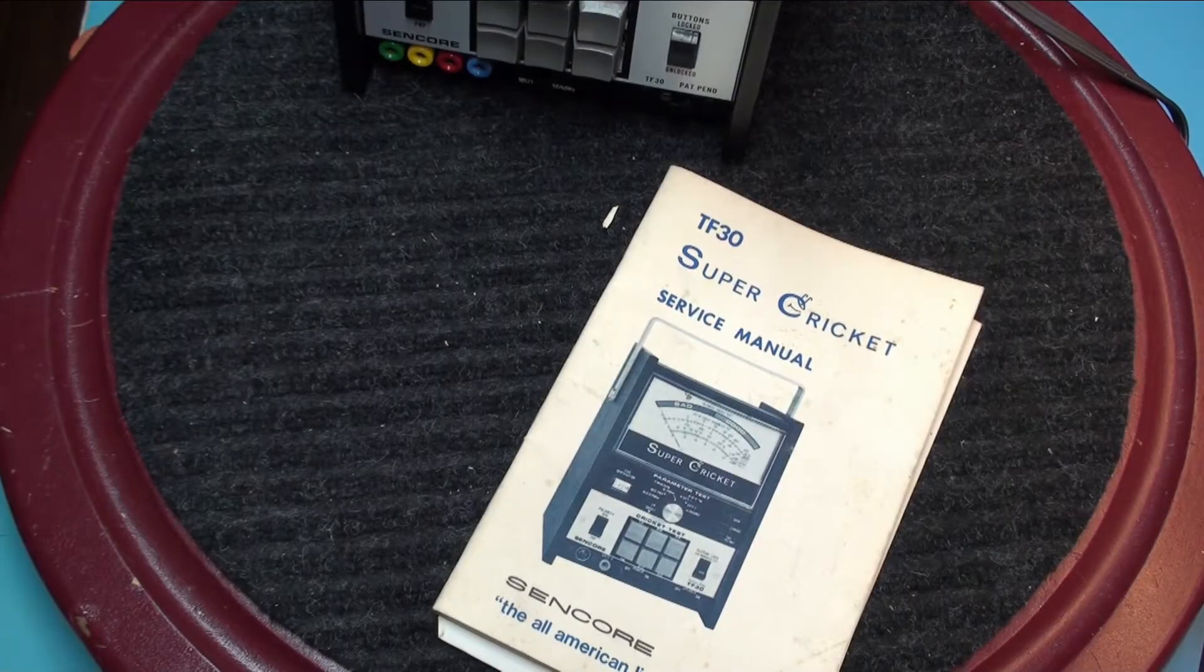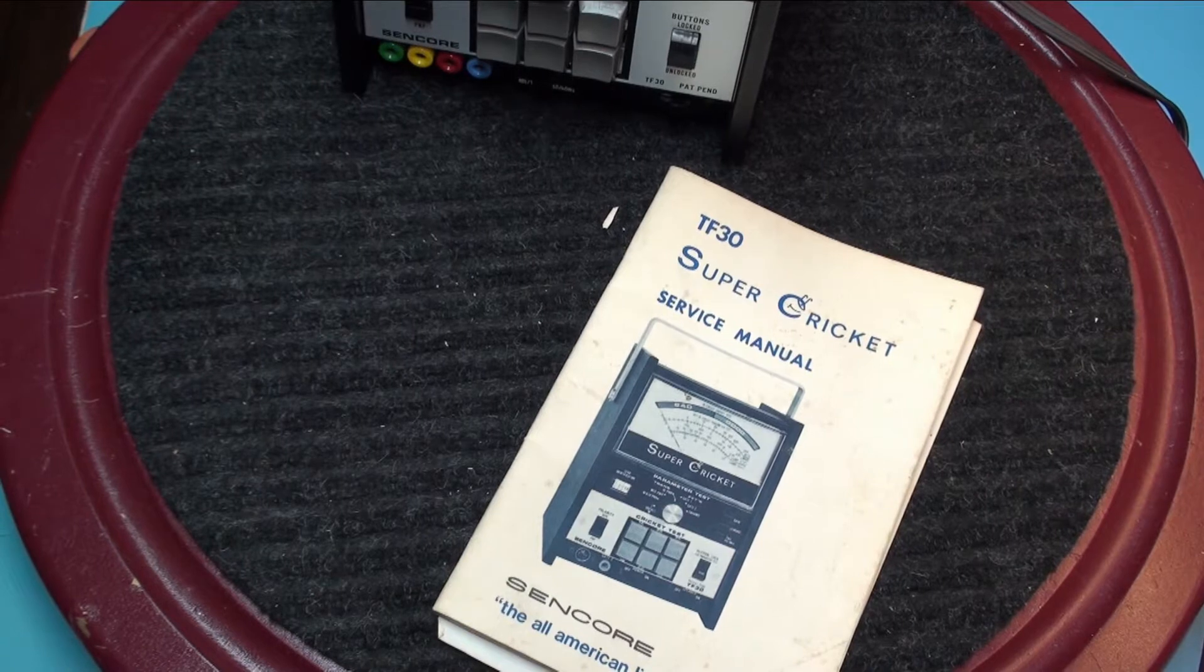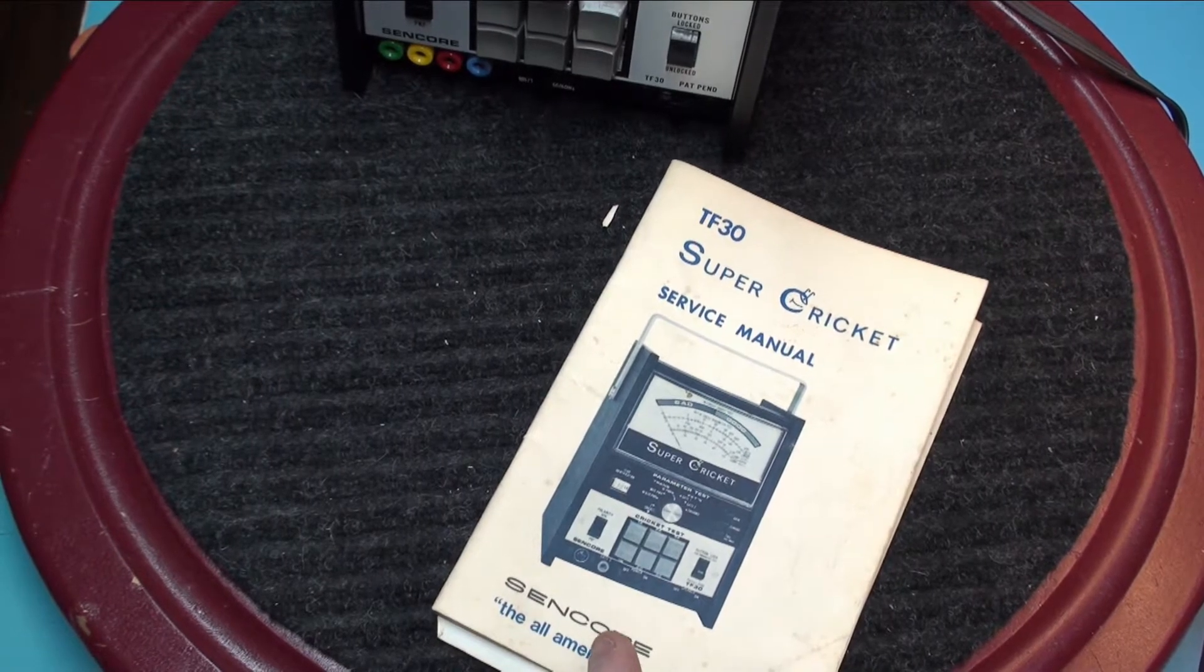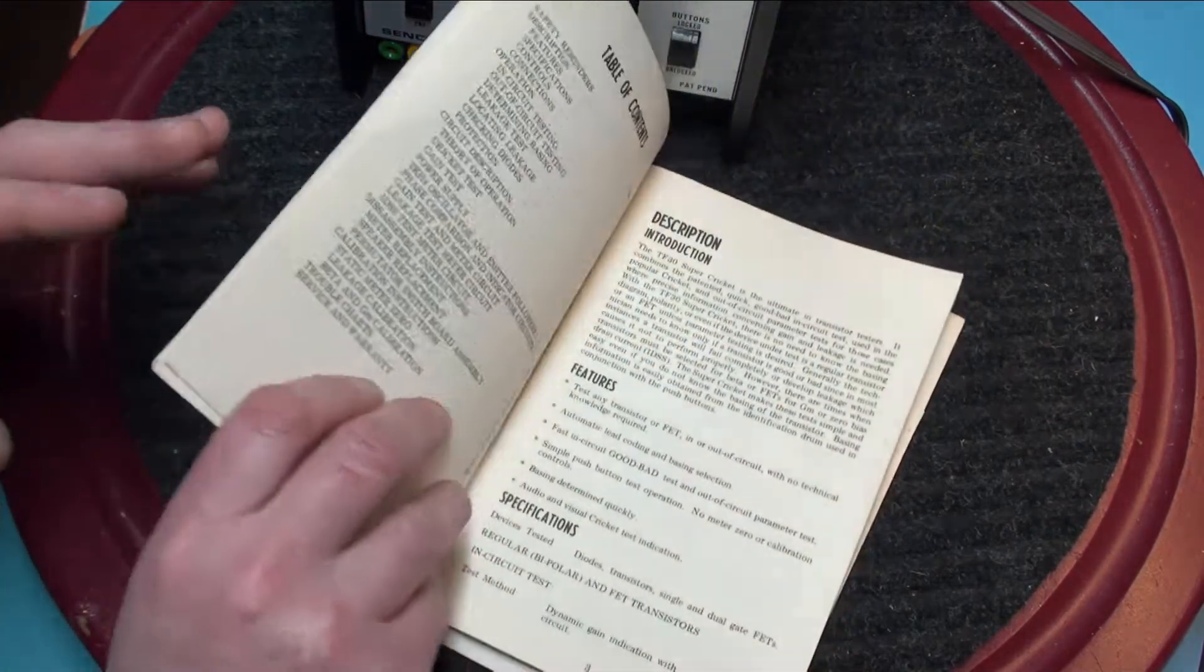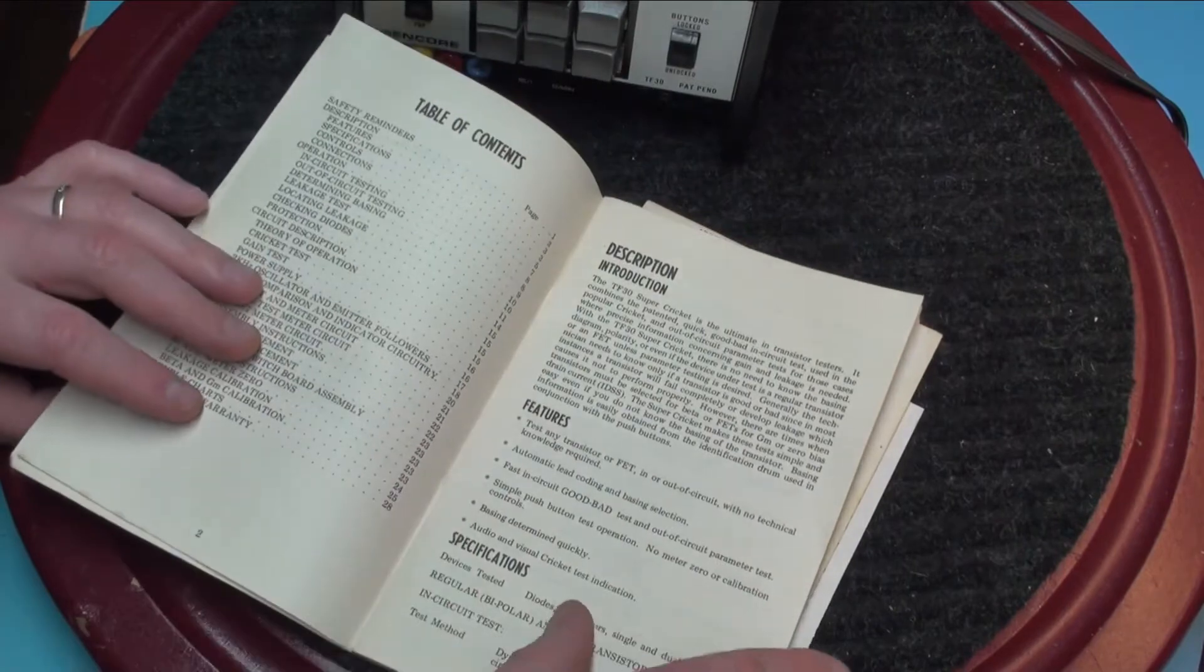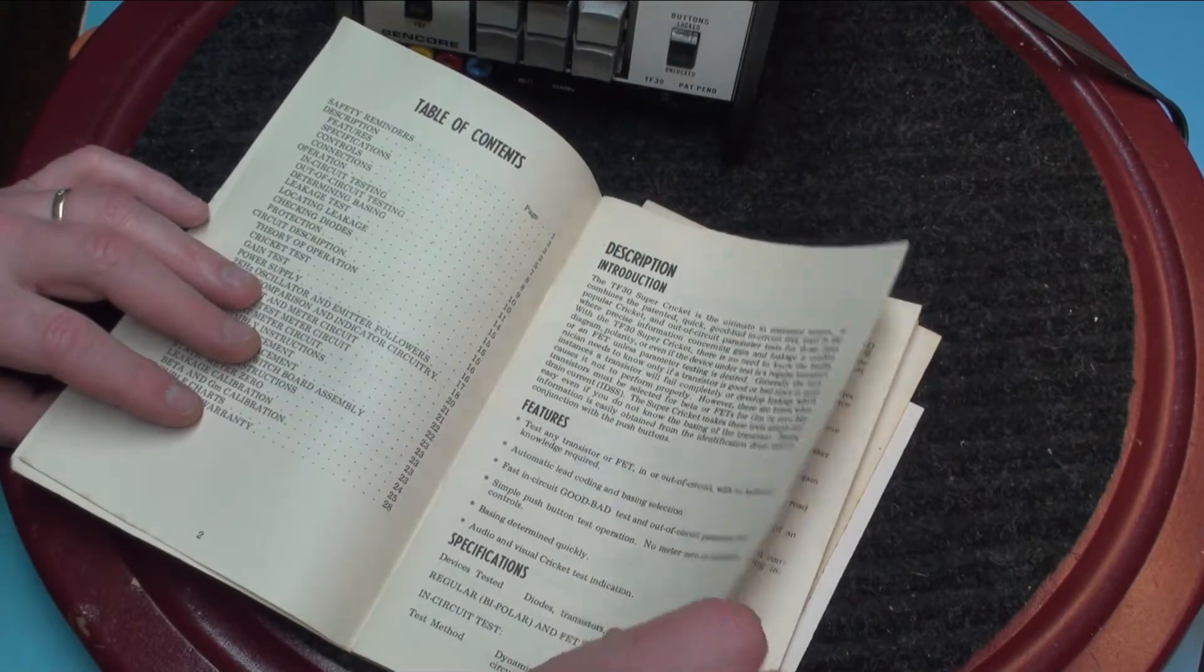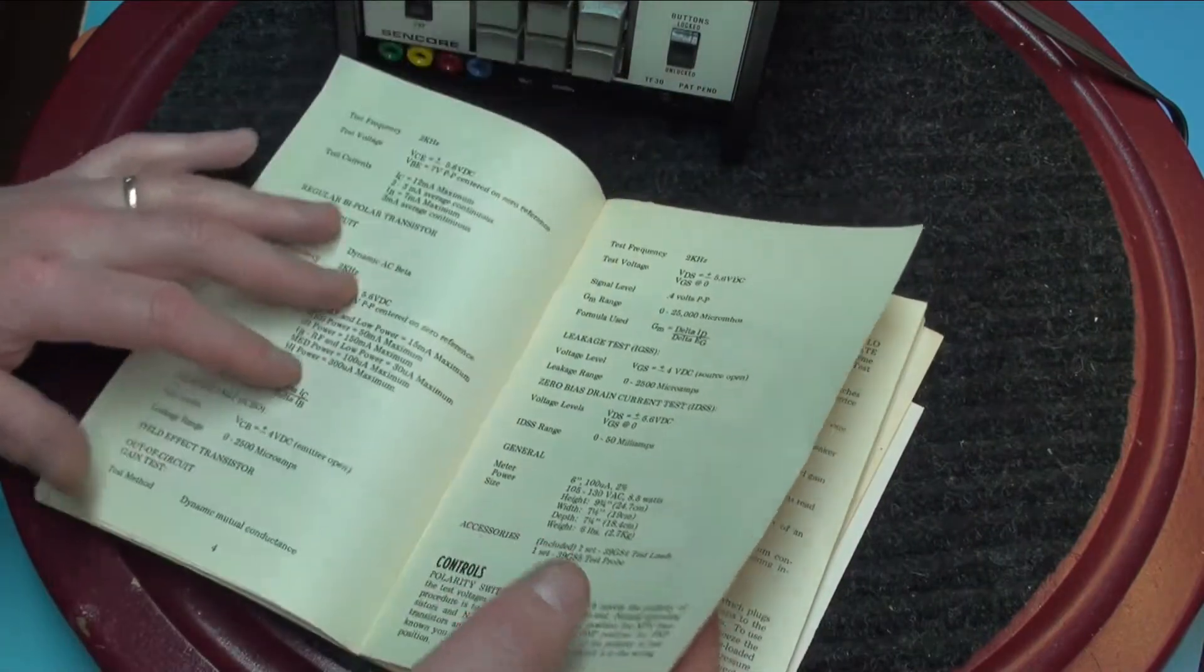Let's take a look at all the accessories that come with this SuperCricket. First off is the original manual. They call it a service manual, and it is indeed, but it also is the operator manual.